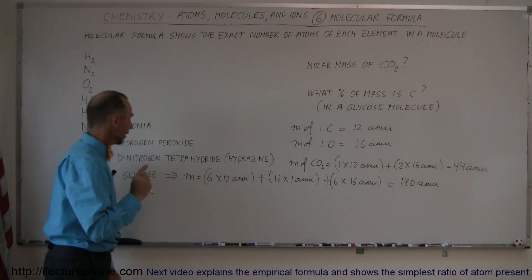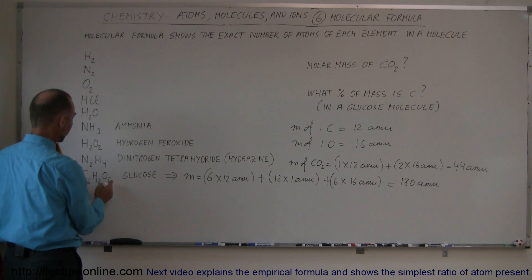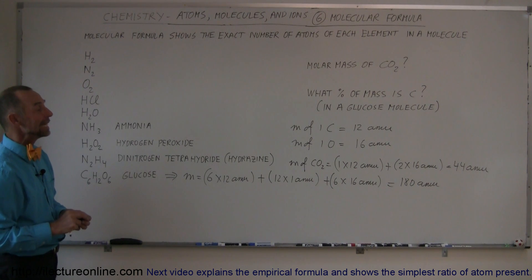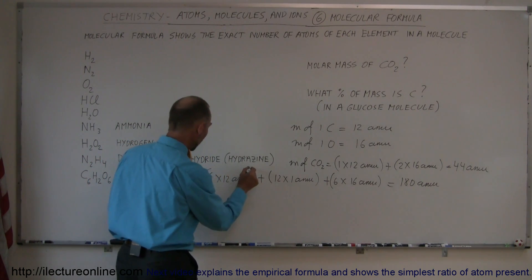So one molecule of glucose, which has a total of 12 plus 12, or 24 atoms in it, has a total atomic mass of 180 AMUs. Now what percentage of that is carbon? Well, the percentage that makes up carbon is right here.